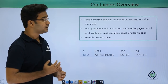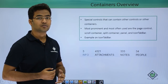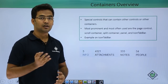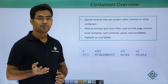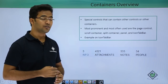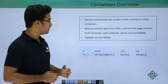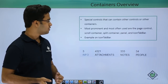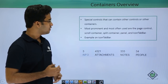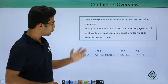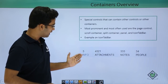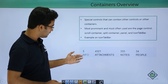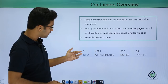Moving on to the containers overview. What are containers? Containers are special controls which can contain other controls within them, or even other containers themselves. The most prominent and most often used are page control, scroll container, split container, panel, and icon tab bar. Here you can see an example of icon tab bar — this is how it looks. This is the text property and this is the count property.